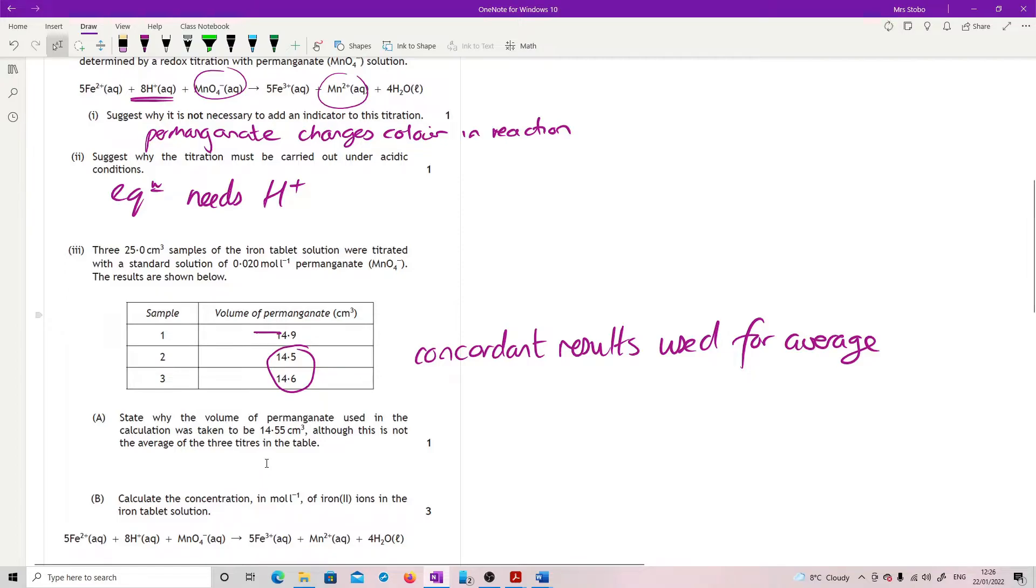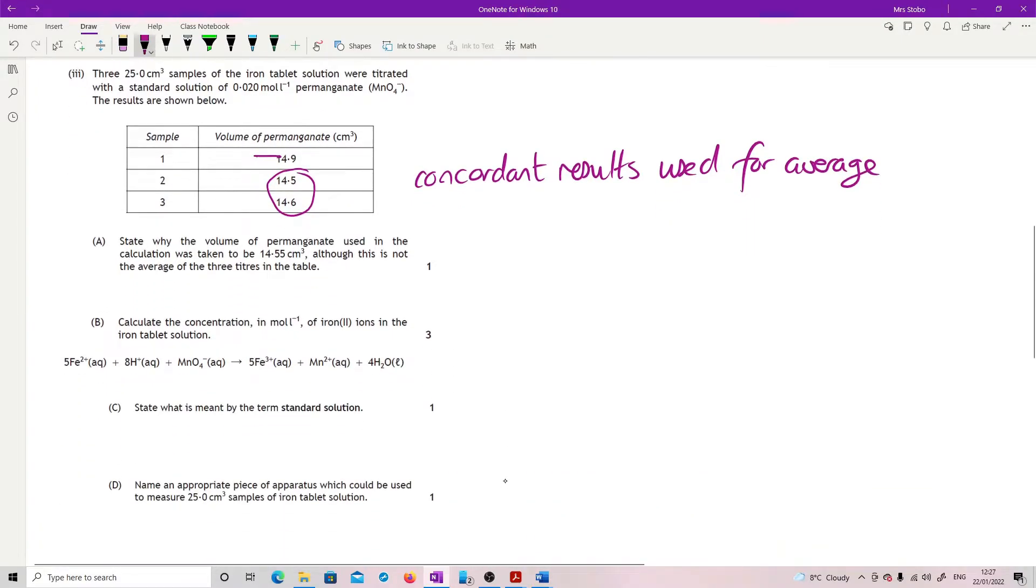Calculate the concentration in moles per liter of iron(II) ions in the iron tablet solution. We could do C₁V₁ over N₁ is equal to C₂V₂ over N₂.